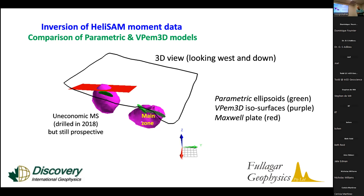That speaks to the earlier comment: you can't treat these conductances as absolute — you can't compare one survey against another one ten kilometers away. Well, there's some comparability if you're always using the same system, same size loop, and same time gates — then you've got comparable data. But if you vary those, you can't compare: a VTEM survey in one area gives a wildly different number than a HeliSAM survey. You just have to be careful. Most of the time we're not too fussed about absolute values anyway, but you certainly start getting into trouble comparing numbers from one system to another, and some clients like to equate conductance with grade.